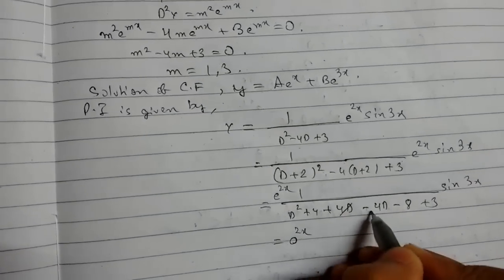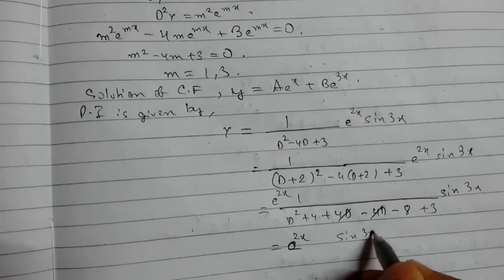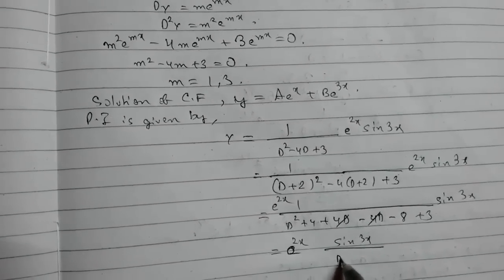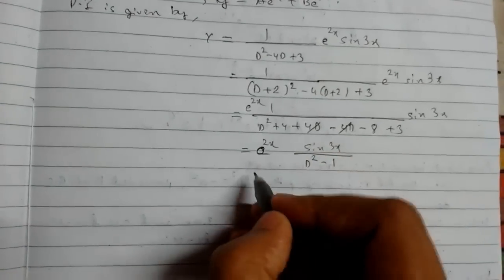So this gets cancelled out. This will be 1. This will be sin(3x) upon D² - 1. Now we will operate sine rule for this.